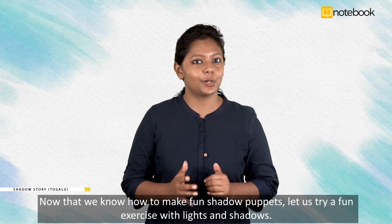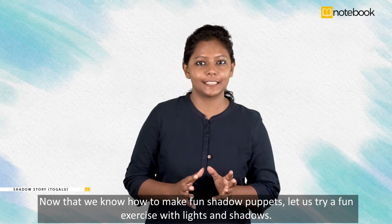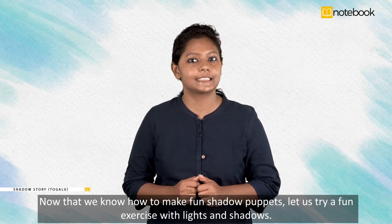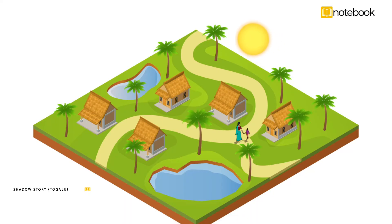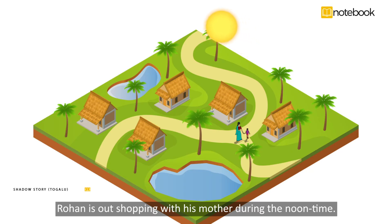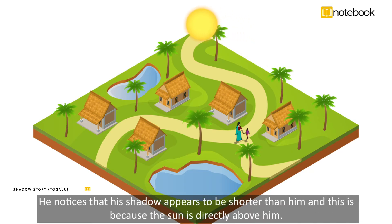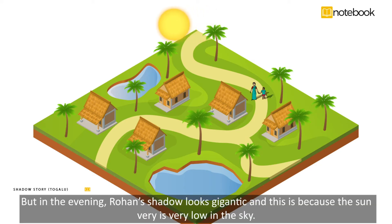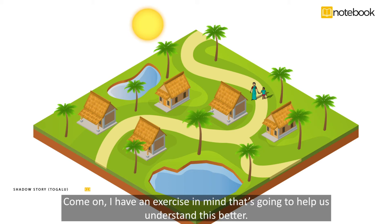Now that we know how to make fun shadow puppets, let us try another fun exercise with lights and shadows. Rohan is out shopping with his mother during the noontime. He notices that his shadow appears to be shorter than him, and this is because the sun is directly above him. But in the evening, Rohan's shadow looks gigantic, because the sun is very low in the sky. Come on, I have an exercise in mind that's going to help us understand this better.